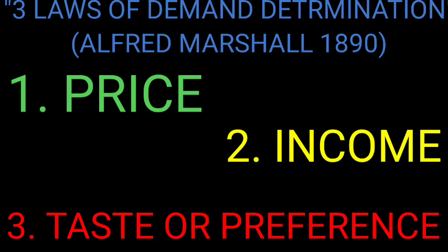Marshall introduced these three laws in 1890, about 130 years ago, and even today he is absolutely right. If you think hard and deep, you will find that price is the most important parameter to determine demand, followed by income and preference. These three laws are still the governing and driving forces of demand.